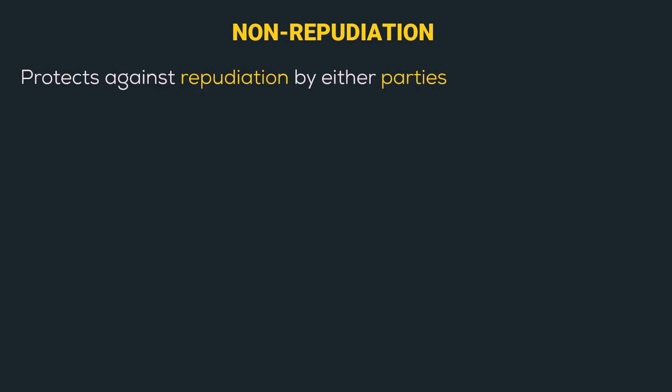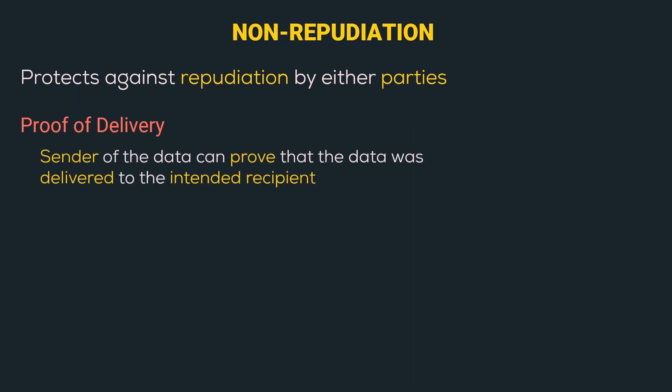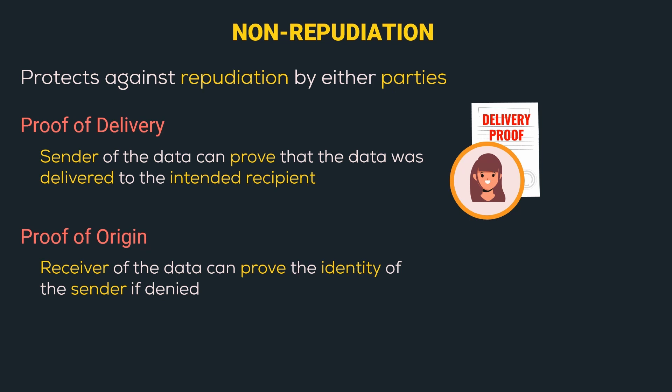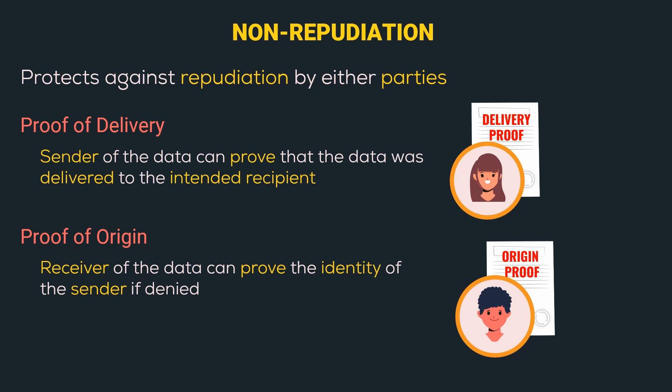The next security service is Non-Repudiation, which protects data against repudiation by either party. We have two types. The first is Proof of Delivery — the sender can prove that the data was delivered to the intended recipient. So Alice has a delivery proof confirming the message was delivered to Bob. The second is Proof of Origin — the receiver can prove the identity of the sender if denied. Bob has the origin proof confirming the message was sent by Alice.